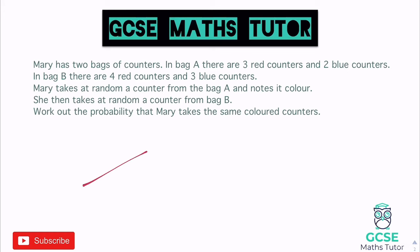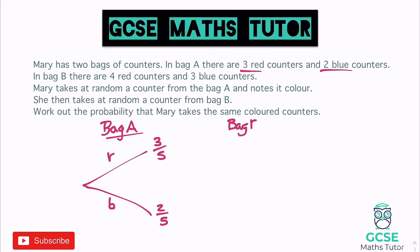We construct a tree starting with bag A, labeled here. It's red or blue. For red there are three reds out of five total, so the probability of red is 3/5, and blue is 2/5. Then for the second part of the tree we look at bag B. We could take a red, giving us a red or blue from bag B. There are four reds and three blues — seven total — so it's 4/7 for red and 3/7 for blue.